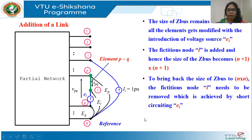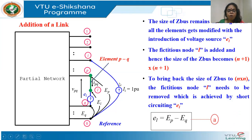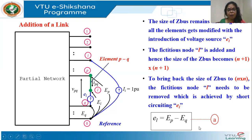I have to find out what are the elements of this new column and new row. I must remove el and we will see how we do it. Since this is like a branch — because I have made the current equal to zero by adjusting el — I will try to use similar equations to what I did when I added a branch. Now, looking at the notation and the direction I have represented el: this end is positive, l is positive with respect to q. Therefore, el is equal to ep minus eq. This is the first equation.